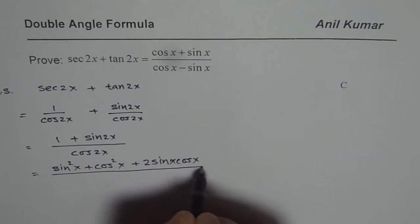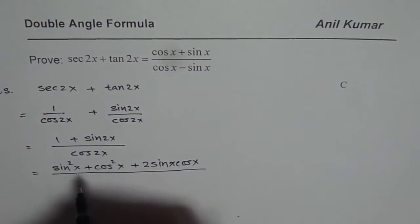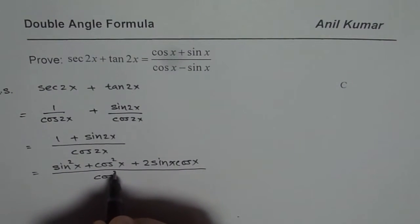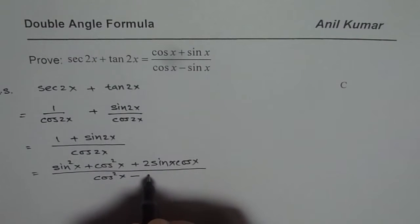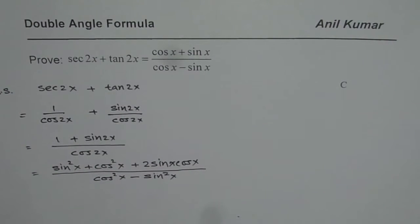The denominator cos 2x, since we are looking for cos x minus sin x, could be written as cos square x minus sin square x. So that is the double angle formulas which we can apply.